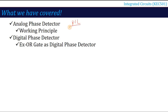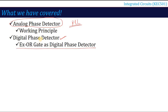In that PLL, we have especially covered in the last lecture the analog phase detector. We talked about the working principle of that phase detector, in which way the input and output signal phase is 90 degrees set to match the frequency of the output signal with the input signal. And we also saw the digital phase detector — the XOR gate as digital phase detector, how XOR gate comparison can be used.